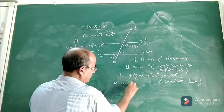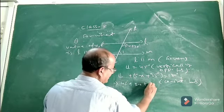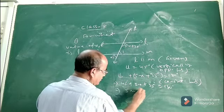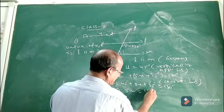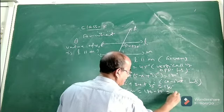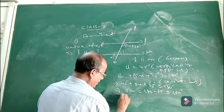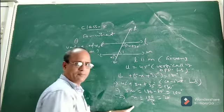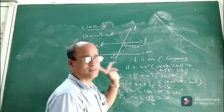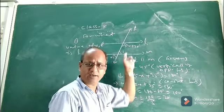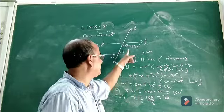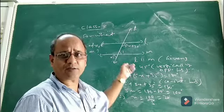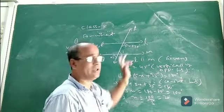Substituting angle 1 as 45 degrees: 45 plus 5x plus 35 equals 180. That means 5x equals 180 minus 80, which is 100 degrees. So x equals 100 divided by 5, which is 20 degrees. Therefore, if the value of x is 20 degrees, then lines L and M will be parallel.